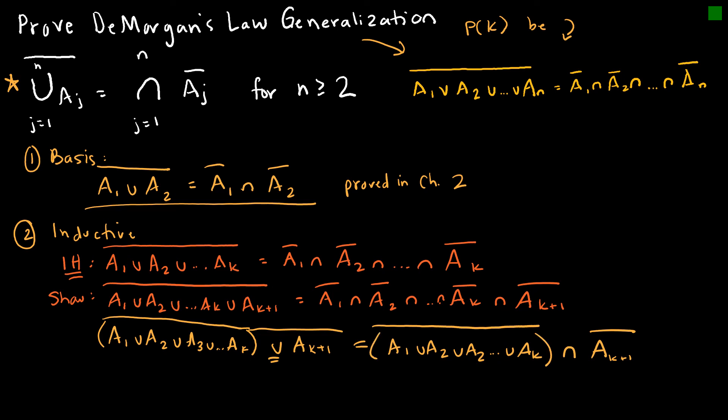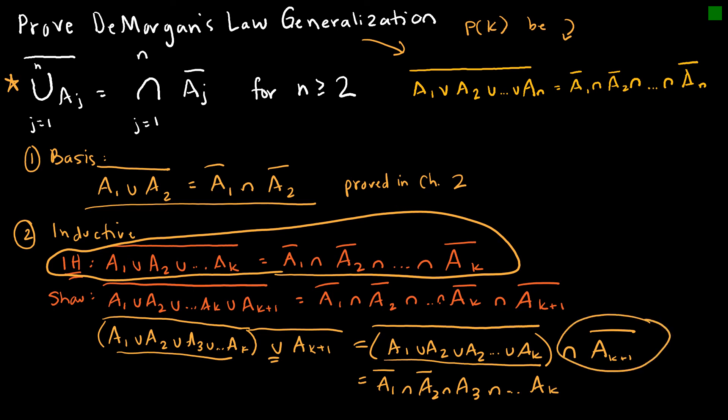So notice all I did was really group all of this together. And why was that helpful to me? Because I know, again, based on my assumption, that all of this is actually equal to A1 intersect A2 intersect A3, and again, I'm just using this fact right here in my inductive hypothesis, intersect all the way to A k. And now I've got this as well. So now I have the intersect of A k plus one complement. And so I've proved DeMorgan's law.